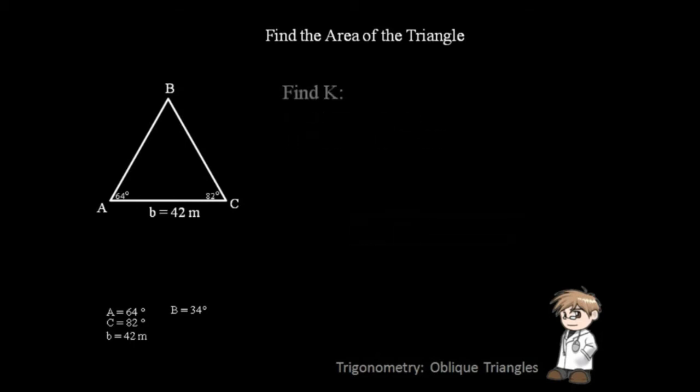Since our given is side B, we will use this formula. Watch as we get the area of the triangle.